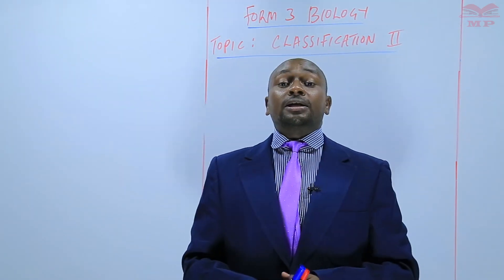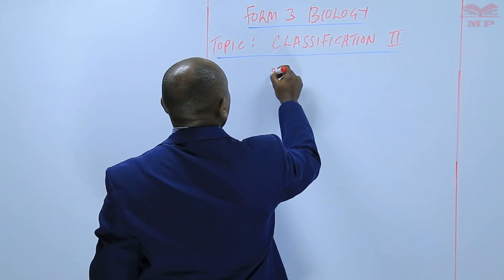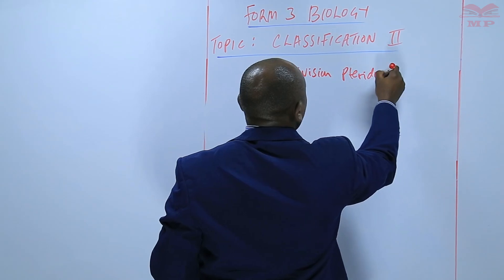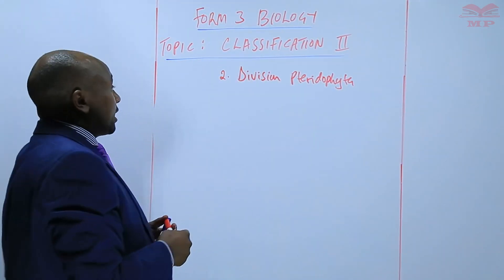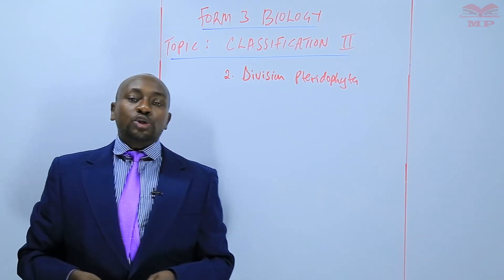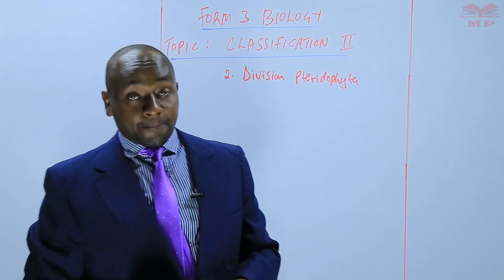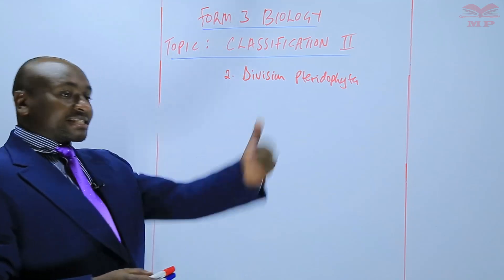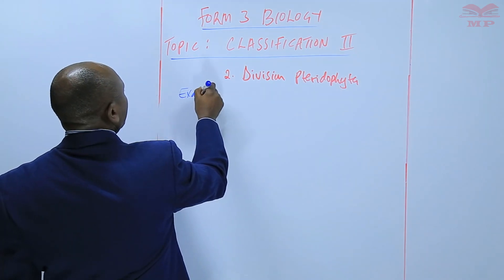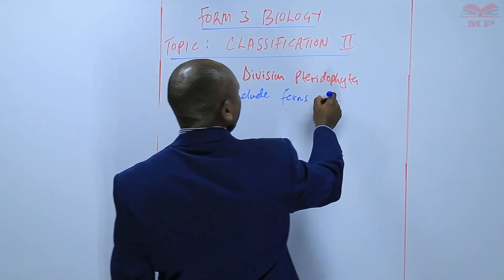The second division in Kingdom Plantae is Division Pteridophyta. We have previously discussed Division Bryophyta, which is the least advanced division within the Kingdom Plantae. So Division Pteridophyta is the second least advanced. Here we have examples such as the ferns and we have